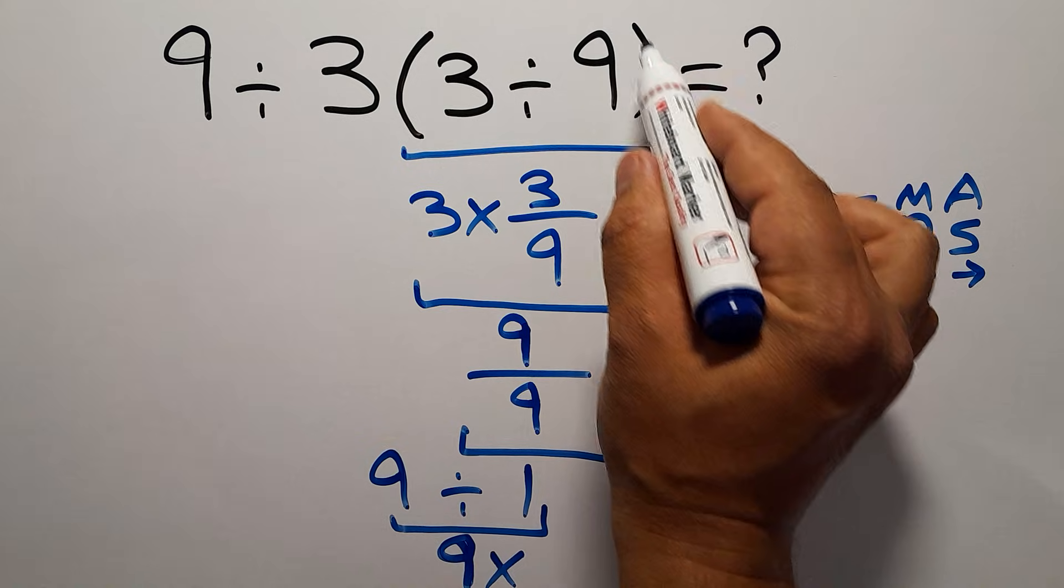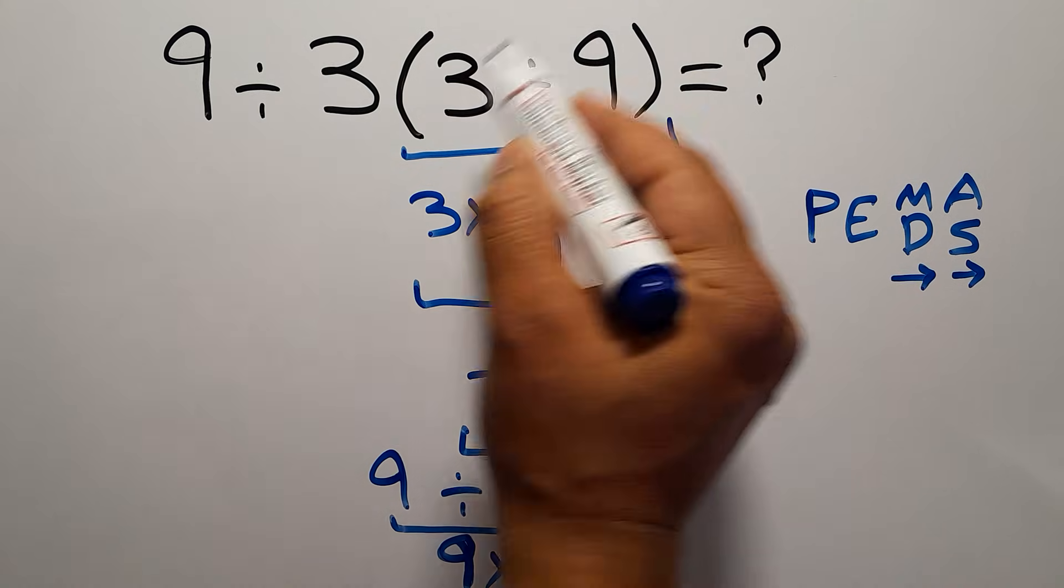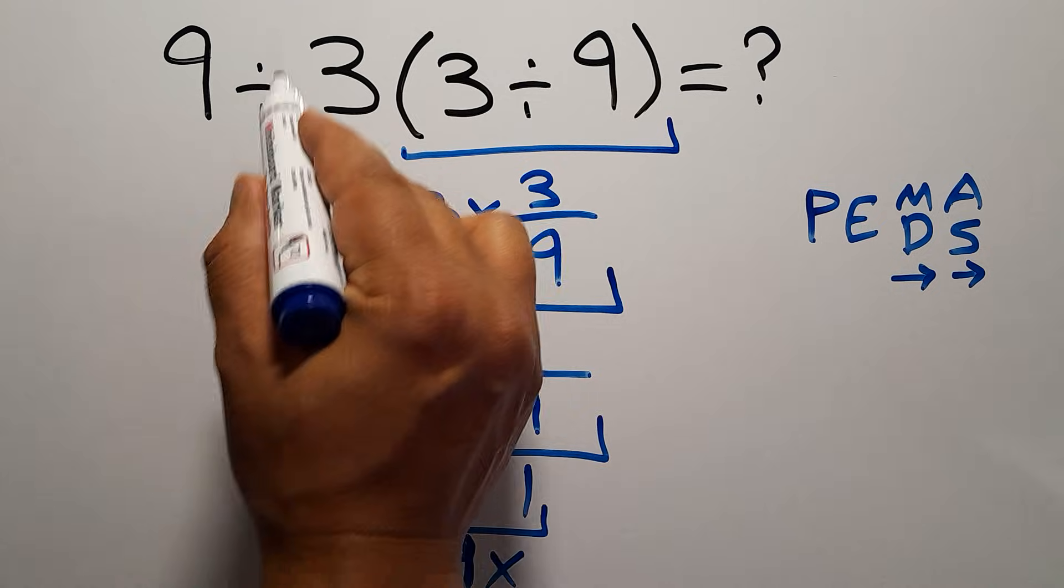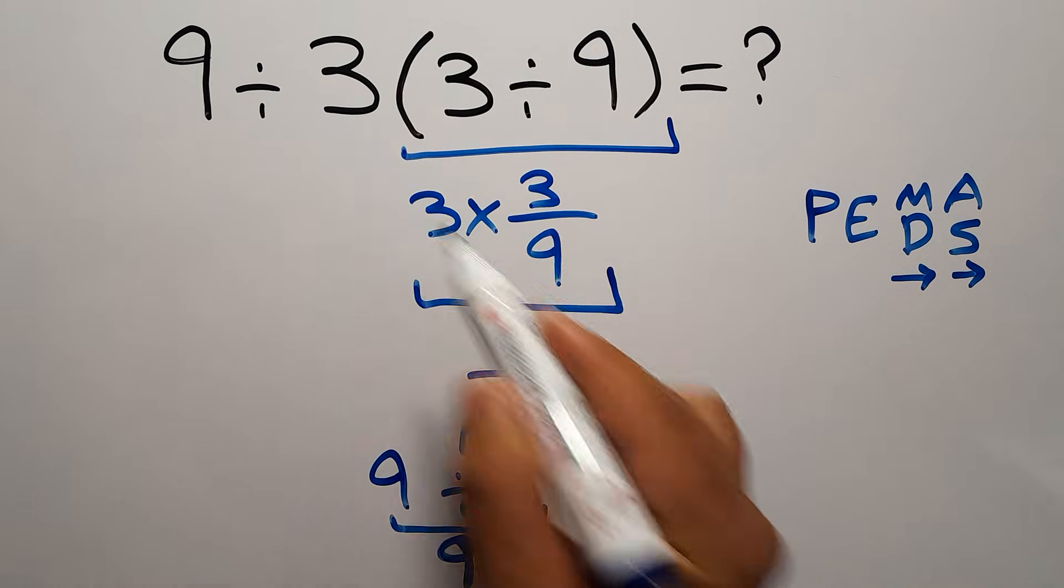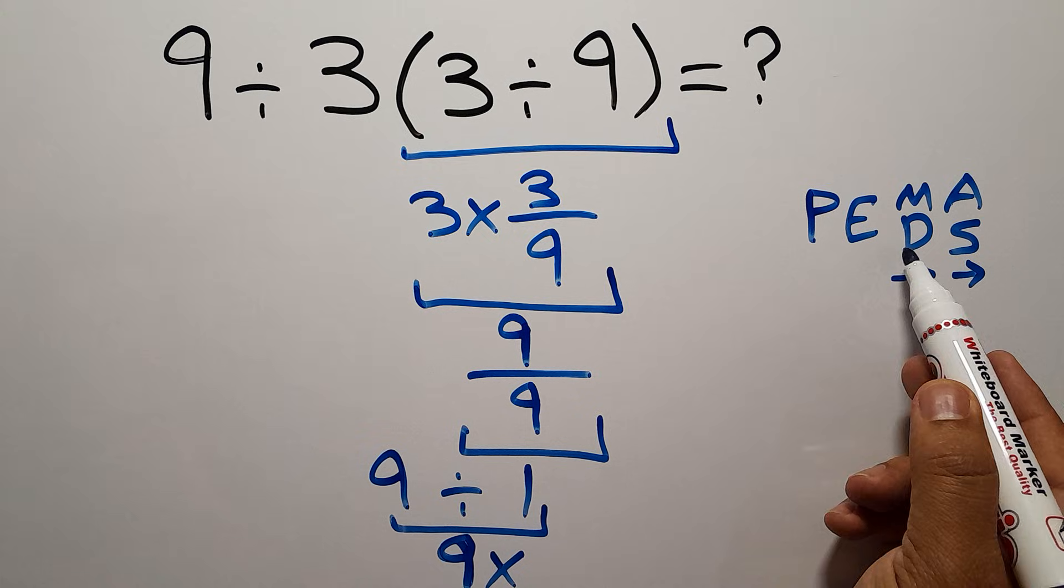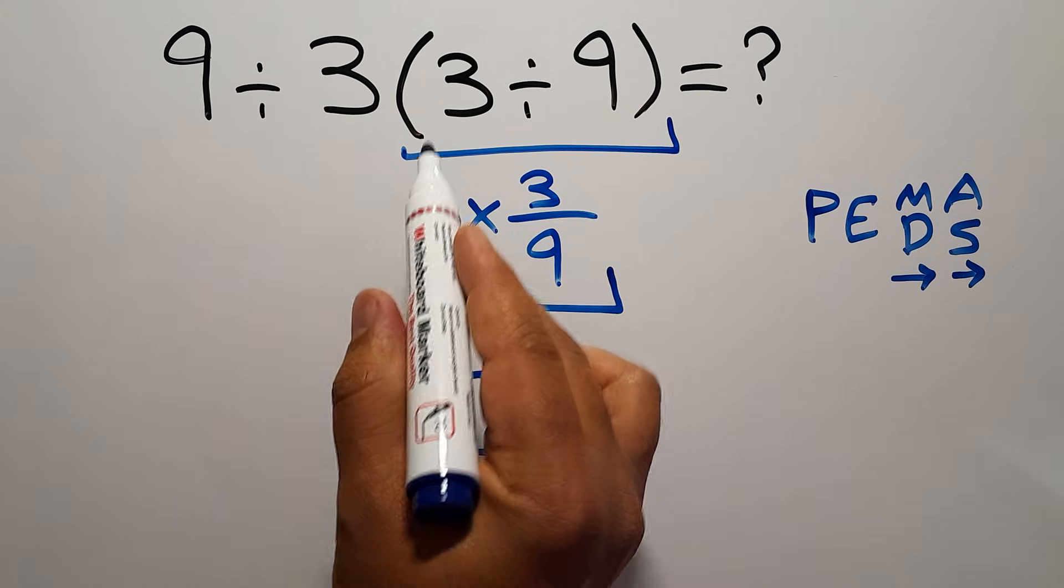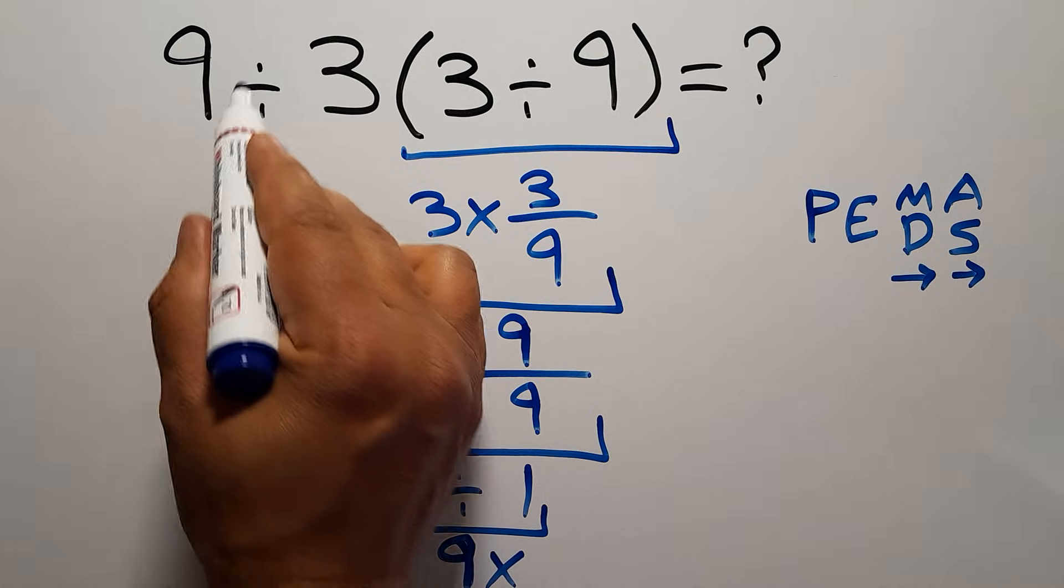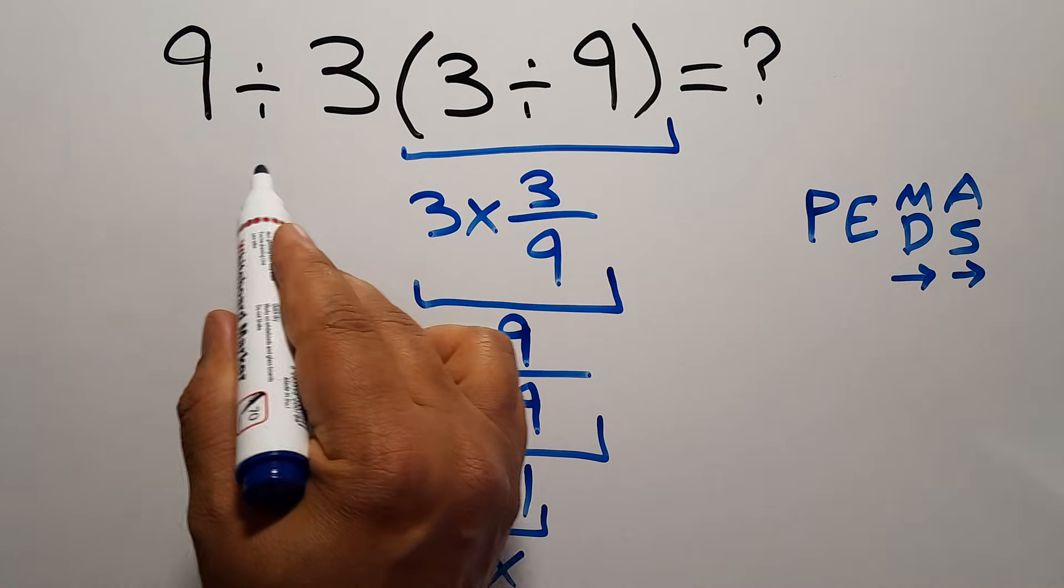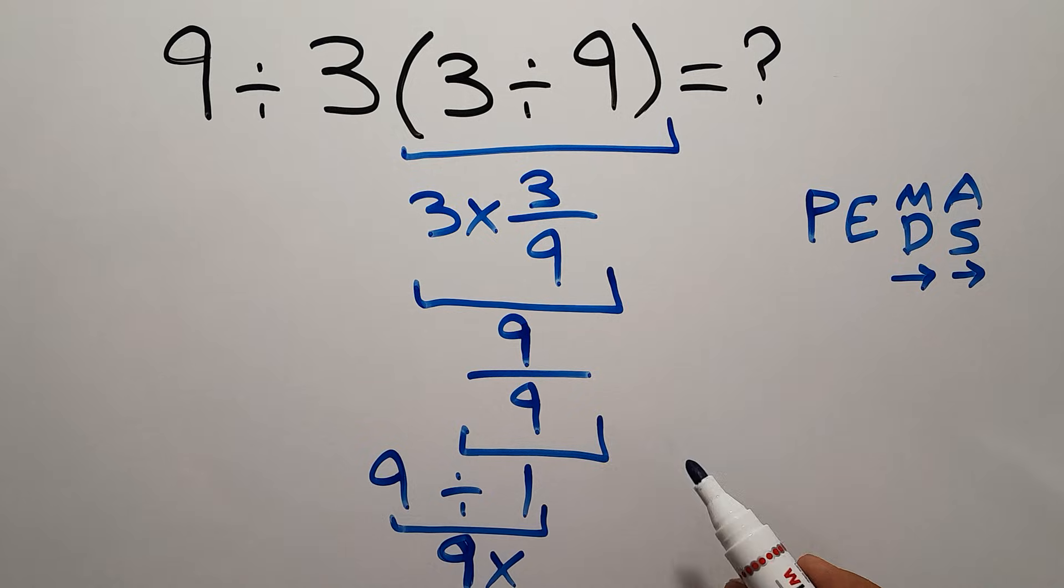So here, first, we have to do this multiplication. After this multiplication, we have one division and one multiplication. As I said, multiplication and division have equal priority, and we have to work from left to right. So after these parentheses, we have to do this division. And finally, we have to do this multiplication.